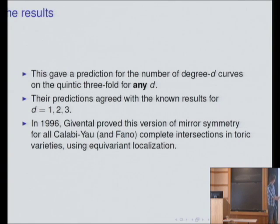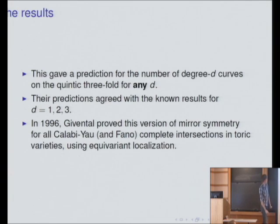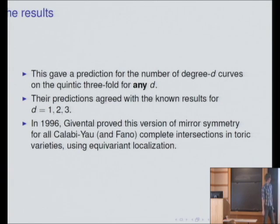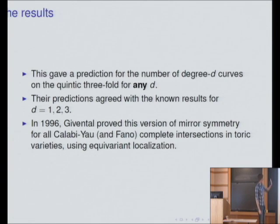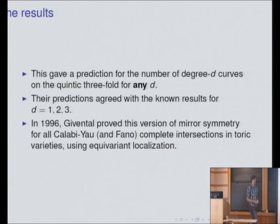This was proven for all Calabi-Yau complete intersections in toric varieties using equivariant localization on the moduli space of curves, where the group action is the toric action on the ambient toric variety. There are also predictions for higher genus curve counts — for example, Alexei Zinger did the case of the quintic threefold for genus one Gromov-Witten invariants. Physicists now have predictions up to genus 51, where Gromov-Witten invariants aren't even carefully defined.